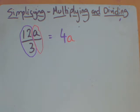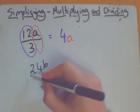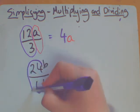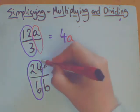Let's take a look at a slightly more complex one. Let's have a look at 24b divided by 6b. Again, I'm going to do the numbers and then I'm going to do the letters.